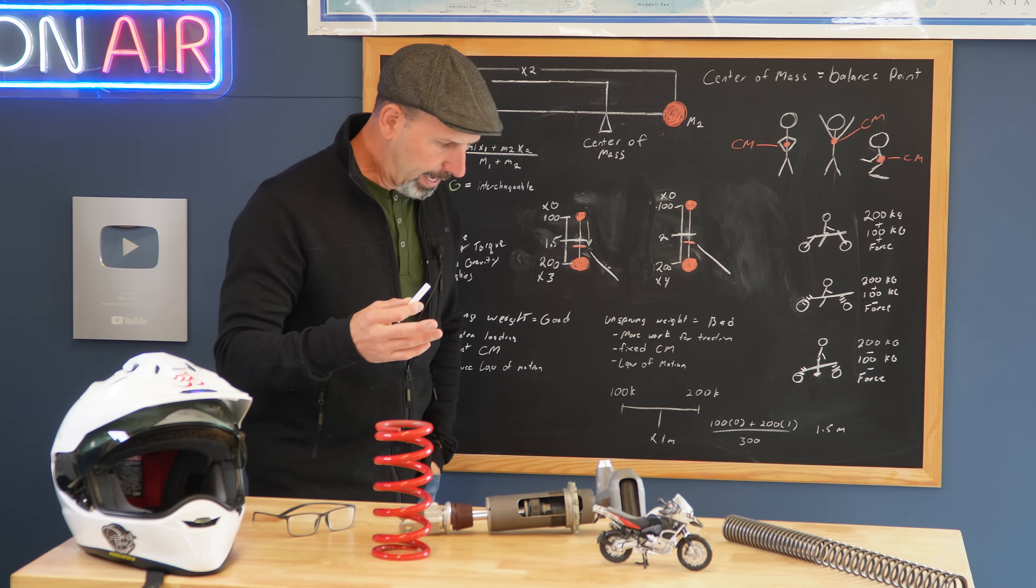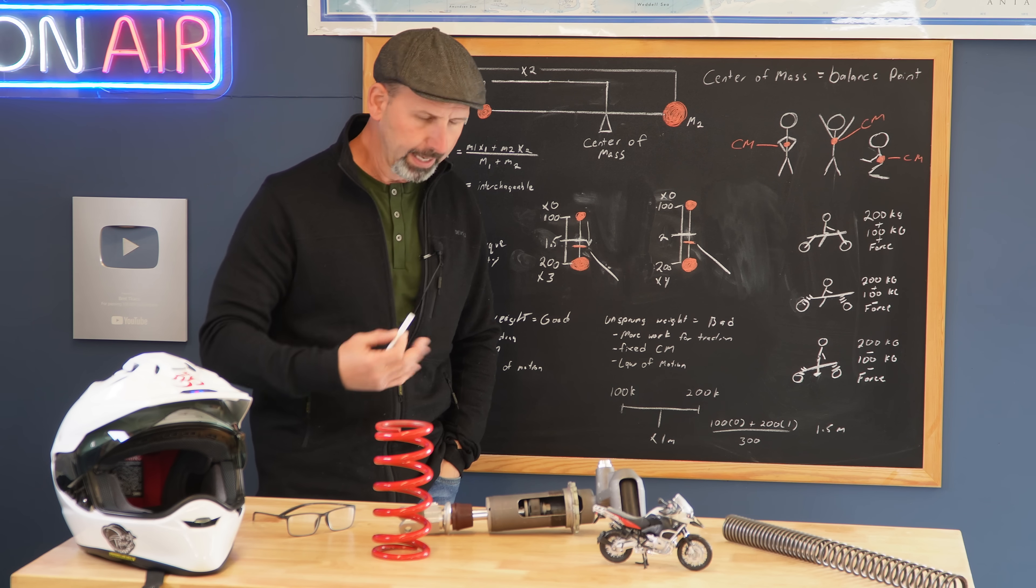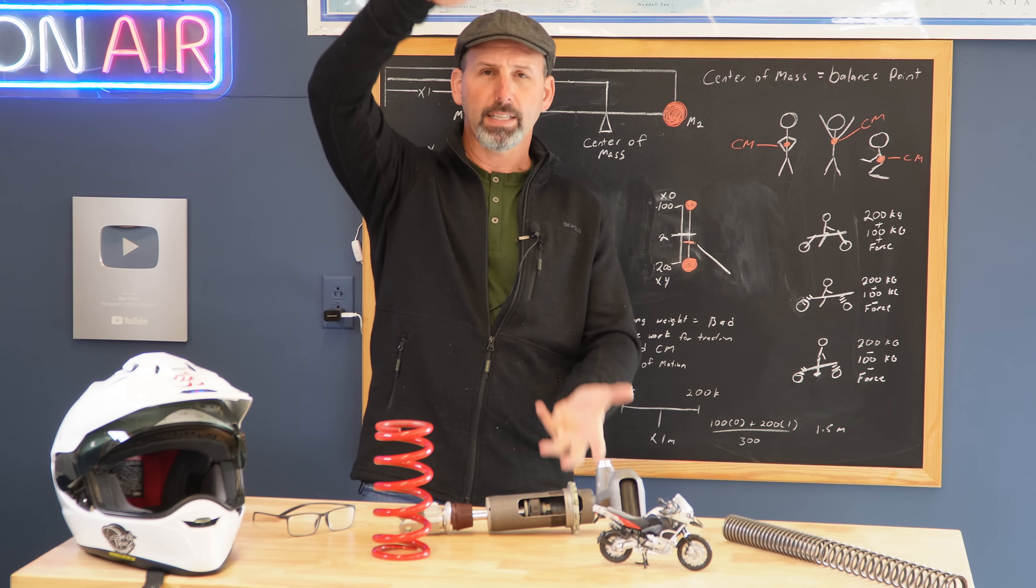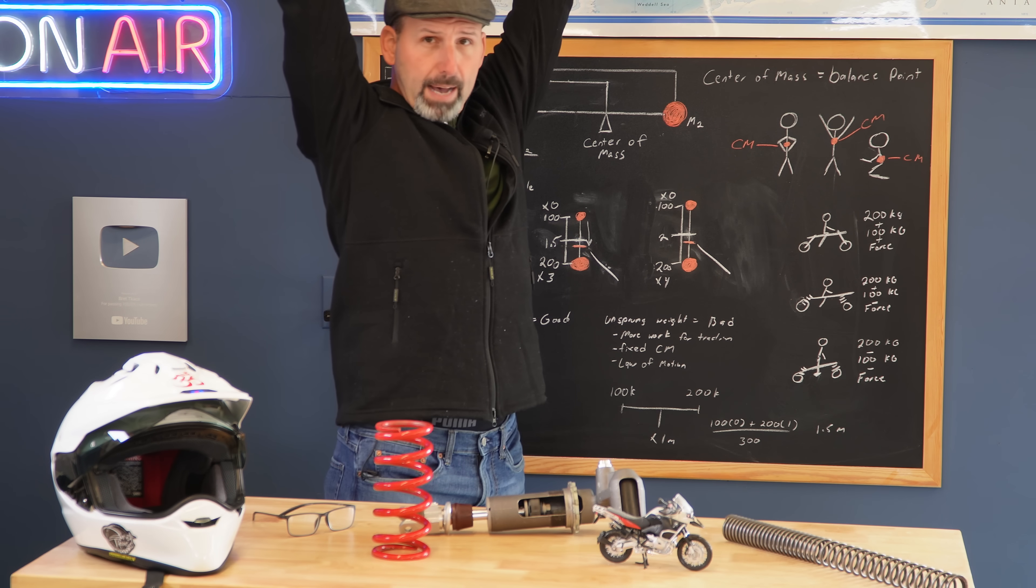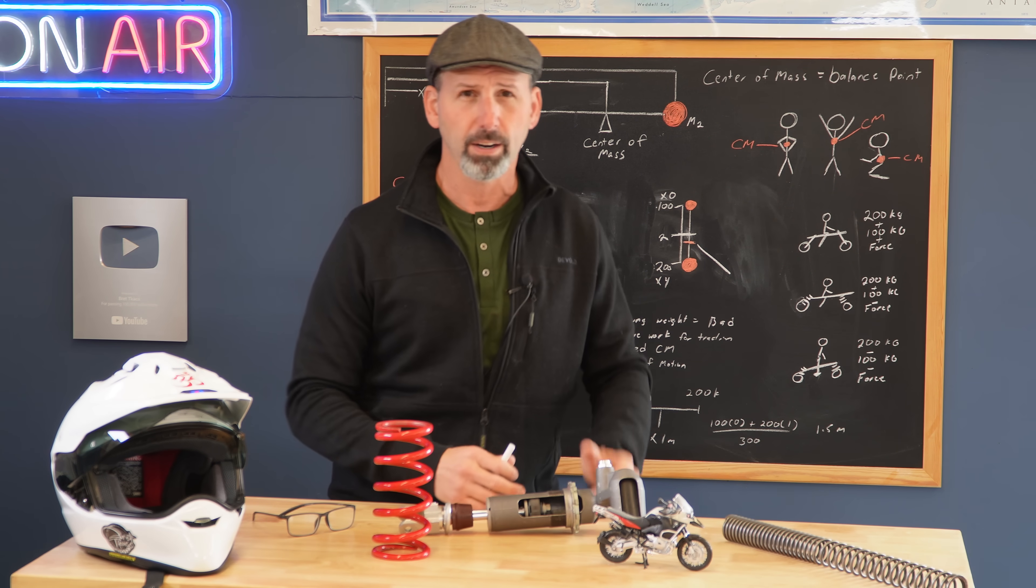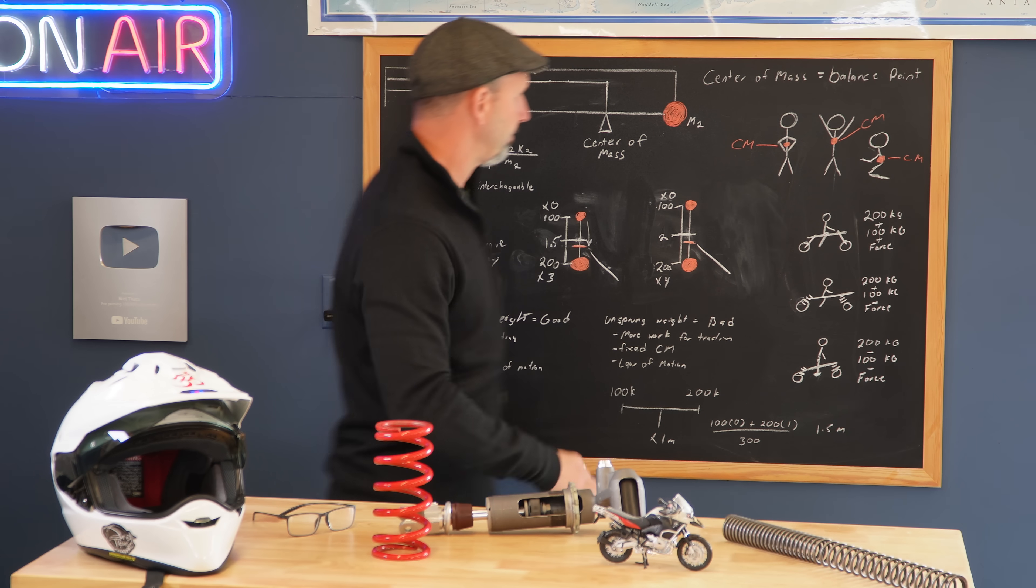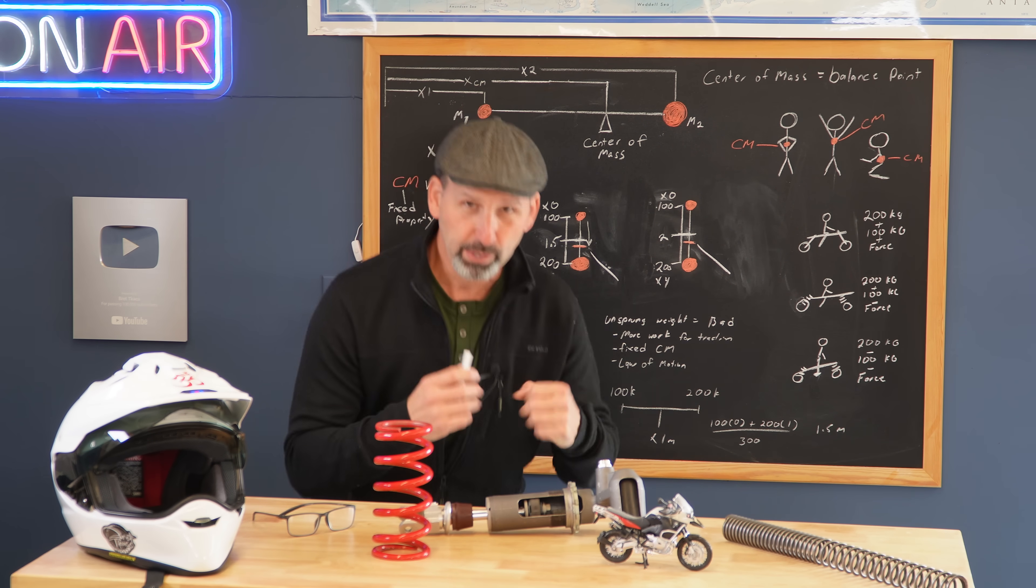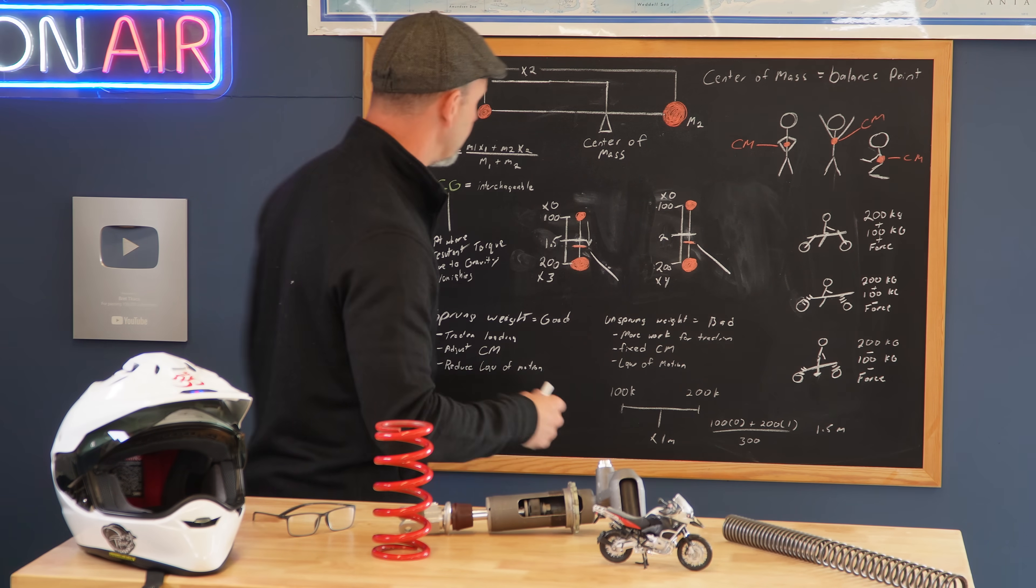This does mean you can change your center of mass based on where you're standing. If I crouch down, my entire mass is now more combined and closer to the center, whereas if I stand up and raise my hands and feet in the air, I'm going to raise that entire center of mass. This is why when we're in an athletic position, we crouch or get more aggressive. It allows us to lower that down and become more balanced.